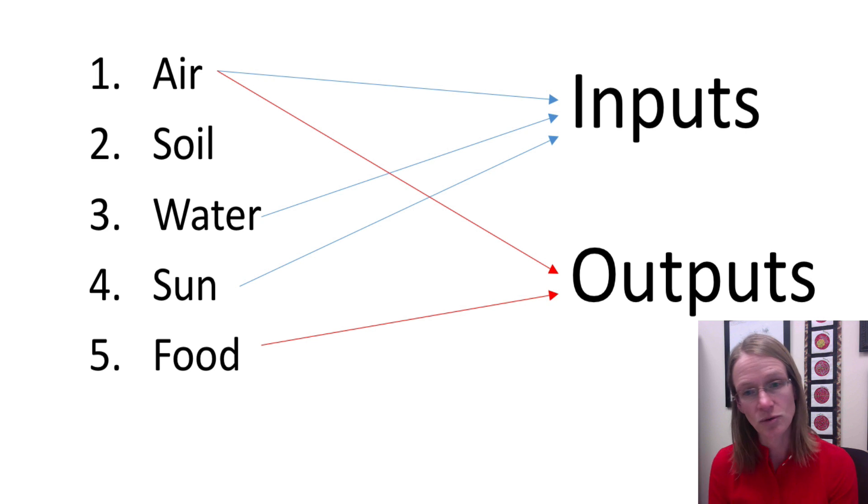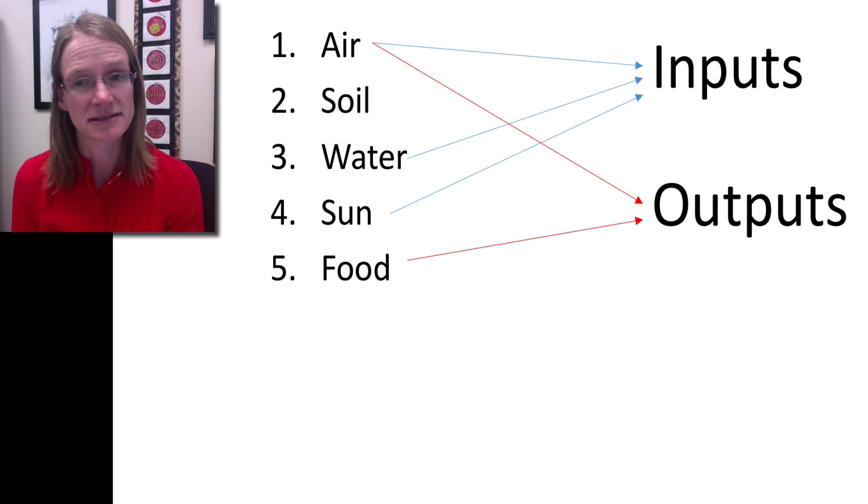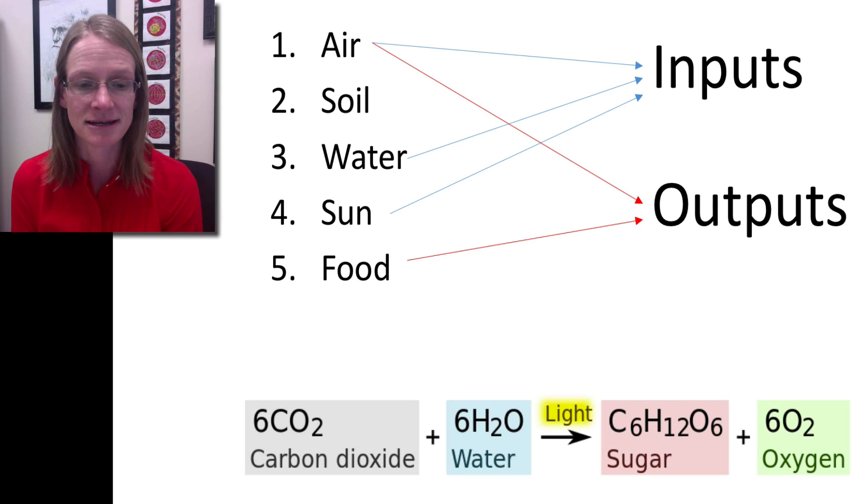If you put all these pieces together, you can think about an equation for the process of photosynthesis. On the left side of the arrow, you have all your inputs like carbon dioxide and water, and you need light to kickstart the reaction. What comes out on the right-hand side are things like sugar and oxygen. This is a kind of oversimplification of a complex process that we're going to be talking about more extensively.